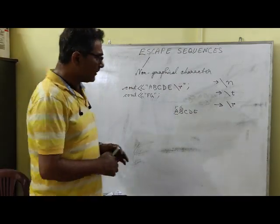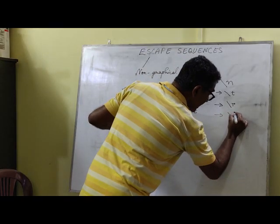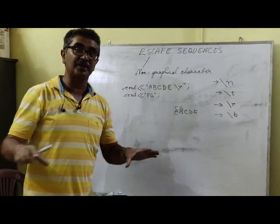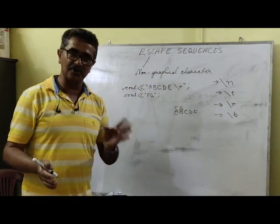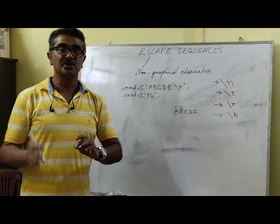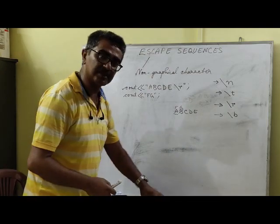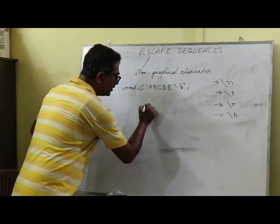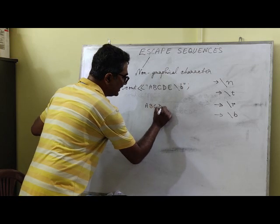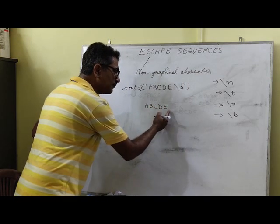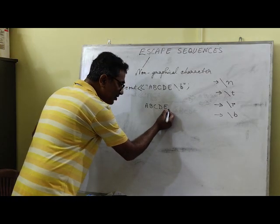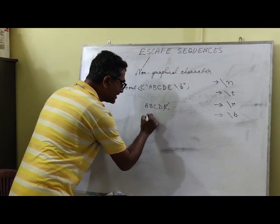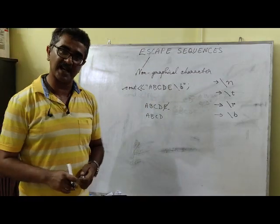Next is backslash B, which produces a backspace — just like the backspace key on your keyboard, it removes the character to the left of the cursor. For example, if you write A B C D E followed by backslash B, it displays A B C D E, then the cursor moves left and deletes the character to its left, which is E. The result displayed is A B C D only.